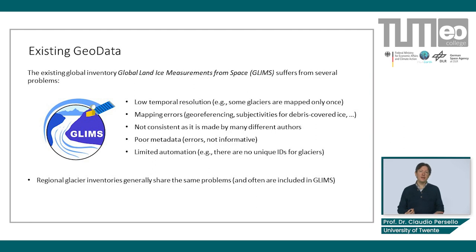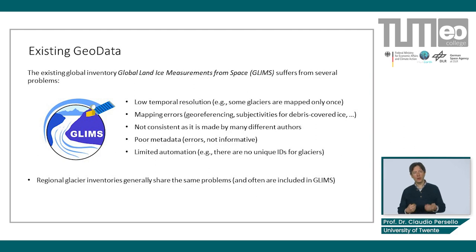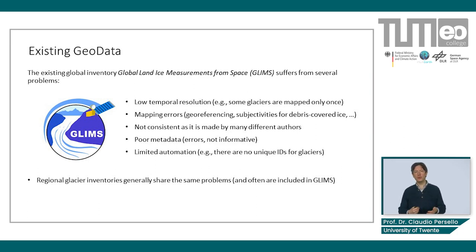Currently, the most complete global inventory of glacier outlines is the Global Land Ice Measurements from Space, GLIMS in short, which includes the outlines for more than 200,000 existing glaciers worldwide.